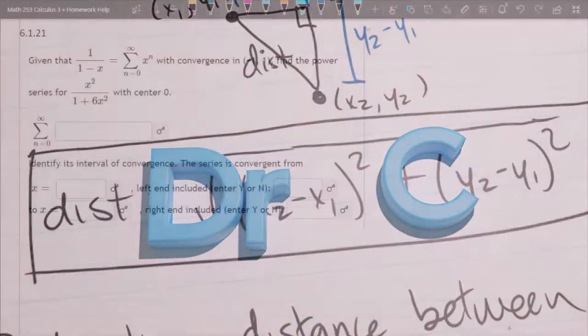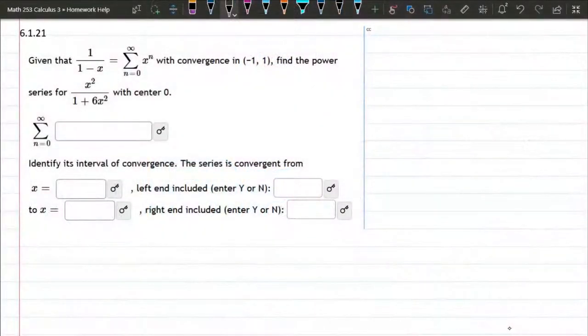We're given that the representation of 1 over 1 minus x is this summation, and also we are given the convergence from negative 1 to 1 not including the endpoints. Now convergence here really means that x has to be between negative 1 and 1. So another way to write that is the absolute value of x has to be less than 1. That's the same as negative 1 is less than x is less than positive 1.